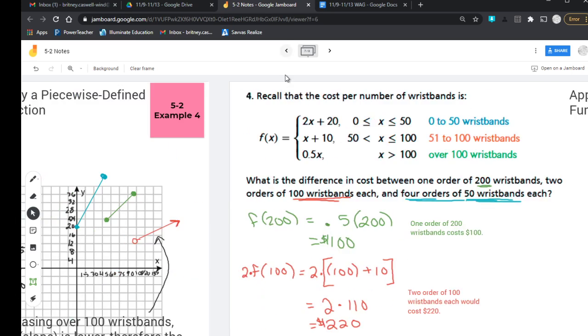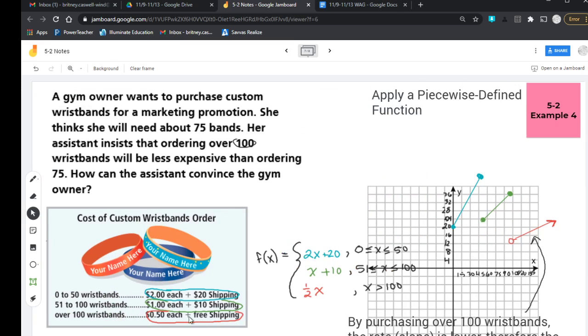Alrighty. So that is how we are applying a piecewise function. In this case, in terms of wristbands that we're purchasing. Think about that the next time you're on Amazon, huh? Until next time.